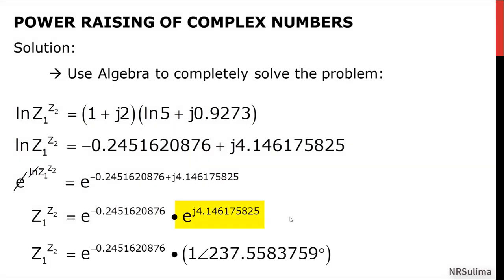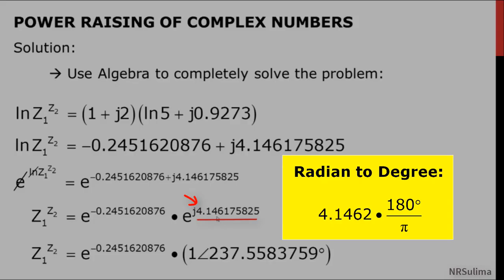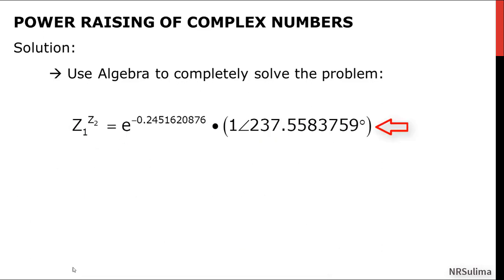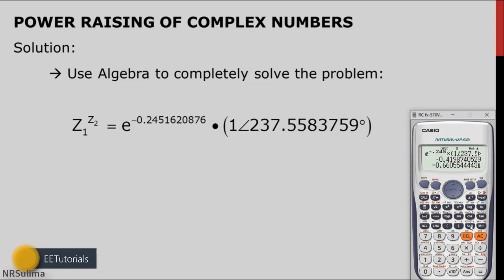Convert 1 exponential j 4.146 to polar form by converting 4.146 radians to degrees by multiplying by 180 over pi. Then multiply these two numbers using the calculator: exponential negative 0.245 times 1 angle 237.5583759, and press equal. The final answer is negative 0.4198 minus j 0.66.